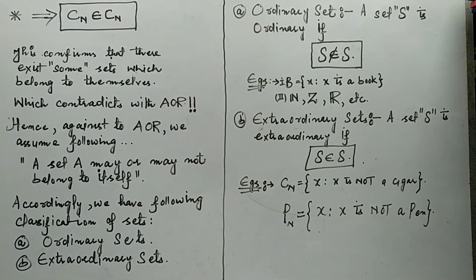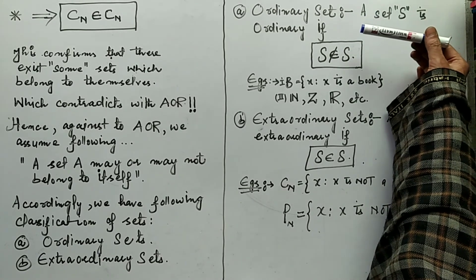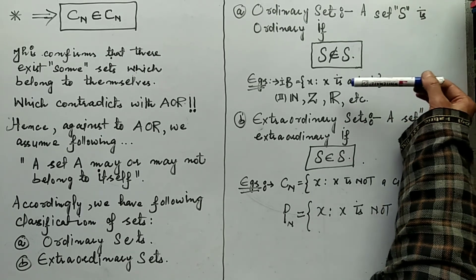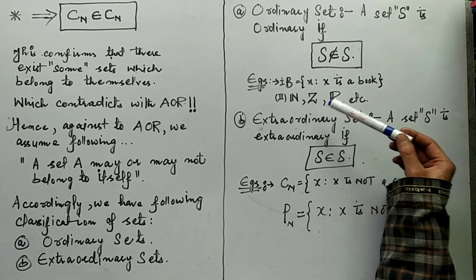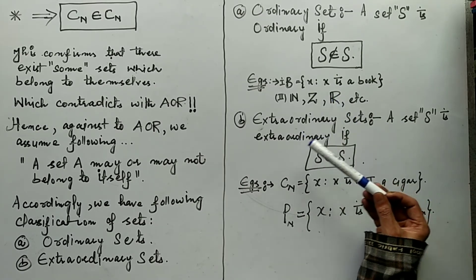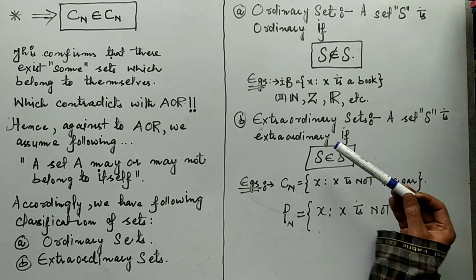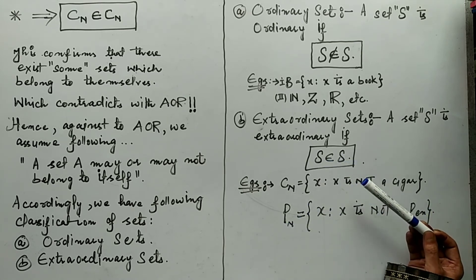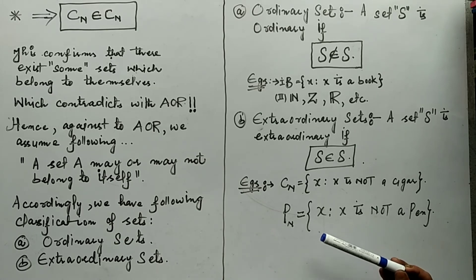Accordingly, we have the following classification: ordinary sets and extraordinary sets. A set S is ordinary if it does not belong to itself — that is, S is not an element of S. An example is set B, the set of all books. A set S is extraordinary if it belongs to itself — that is, S is an element of S. The set C_N is an example of an extraordinary set. You can create many more such extraordinary sets yourself.